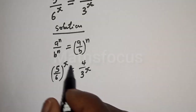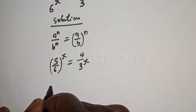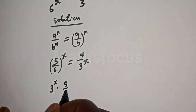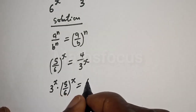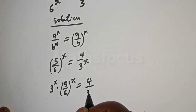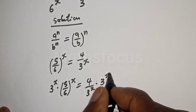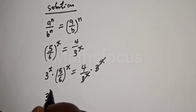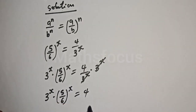Then let's multiply both sides of the equation by 3 raised to power x. That is, 3 raised to power x multiplied by 5 over 6 raised to power x is equal to 4 over 3 raised to power x multiplied by 3 raised to power x. This will cancel, giving us 3 raised to power x multiplied by 5 over 6 raised to power x is equal to 4.